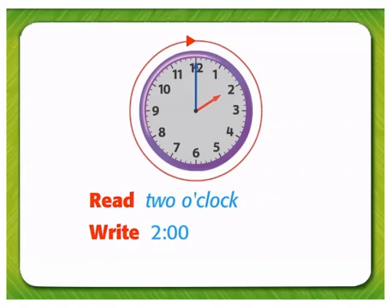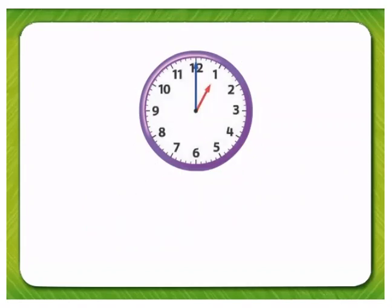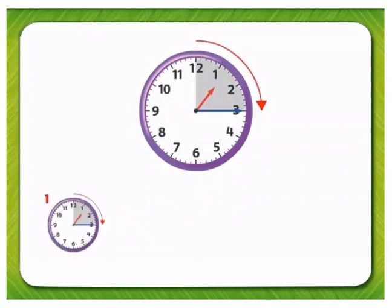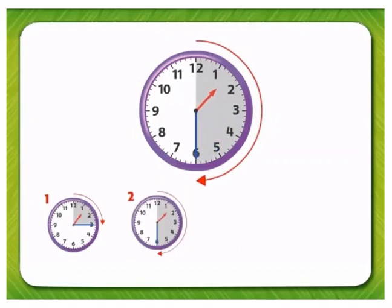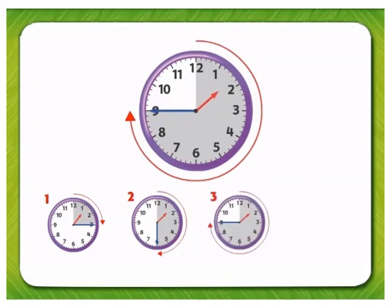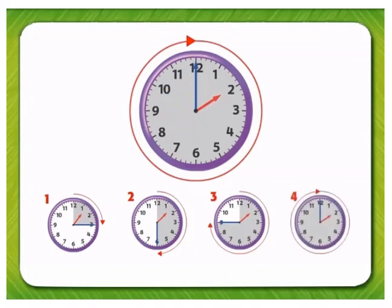How many quarter hours have passed since Max went to the dentist? From 1 to 1:15 is 1 quarter hour. From 1:15 to 1:30 is 2 quarter hours. From 1:30 to 1:45 is 3 quarter hours. And from 1:45 to 2 o'clock is 4 quarter hours.